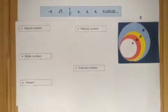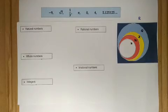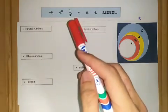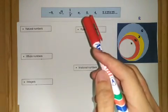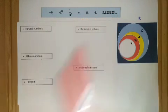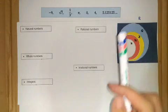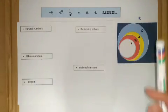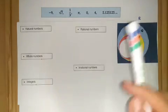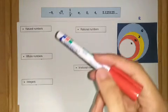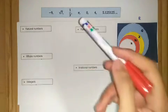Hello and hi everyone. Let's have a look at this example here. We have a set of numbers with 1, 2, 3, 4, 5, 6, 7 elements here and we want to classify them accordingly. We also have our Venn diagram here to help us. First and foremost, I would like to recall the definition of each type of these numbers.